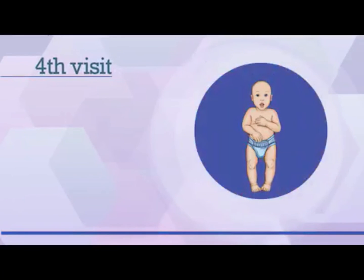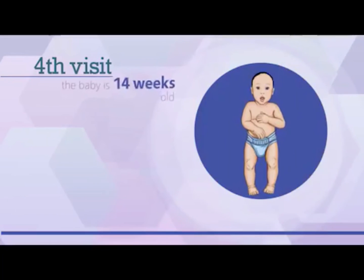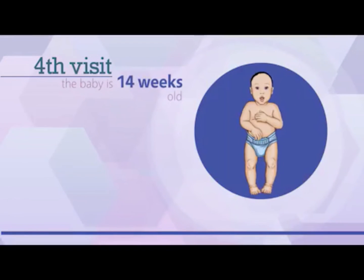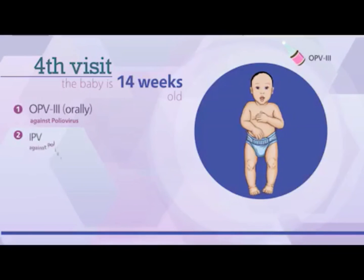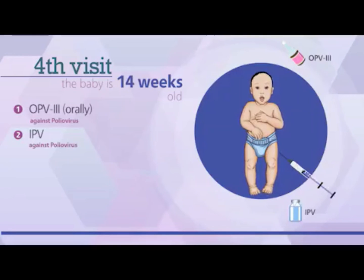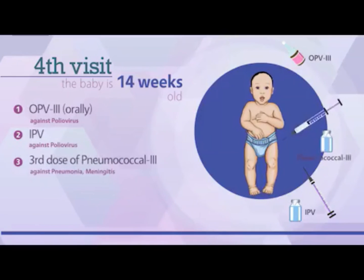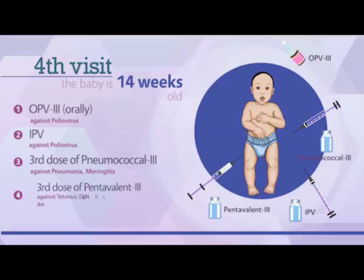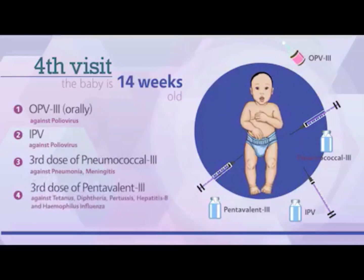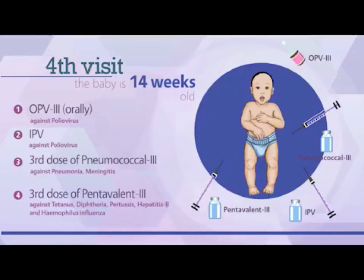The fourth visit is scheduled when the baby is 14 weeks old. On this visit, the third dose of OPV3 is given orally along with the first dose of IPV — injectable polio vaccine — given intramuscularly in the left thigh for protection against polio, the third dose of pneumococcal 3 administered intramuscularly in the left thigh, and pentavalent 3 vaccine administered intramuscularly in the right thigh.